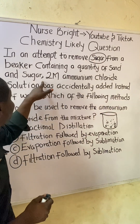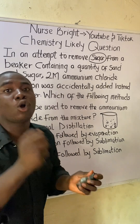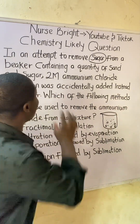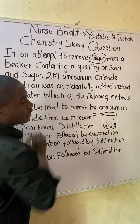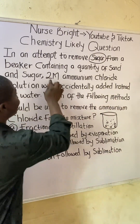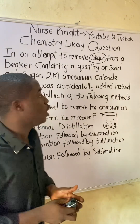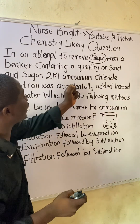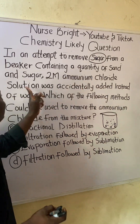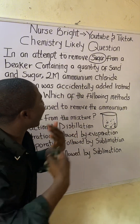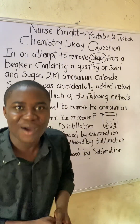Moving further: two molar ammonium chloride — note that the capital letter M means molar concentration — so a two molar concentration of ammonium chloride solution was accidentally added instead of water.